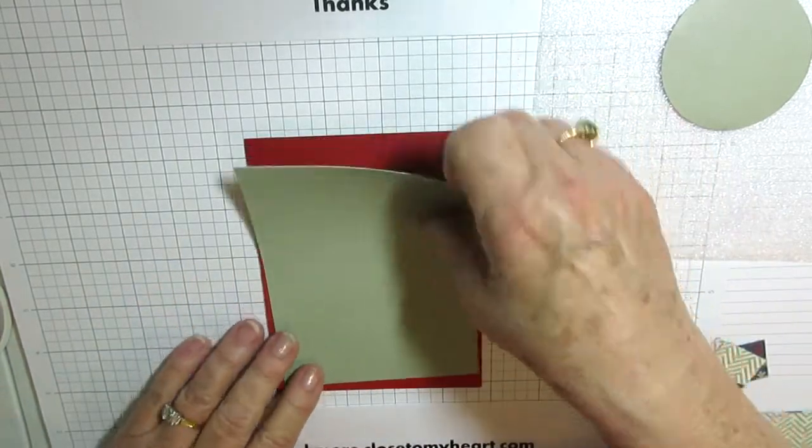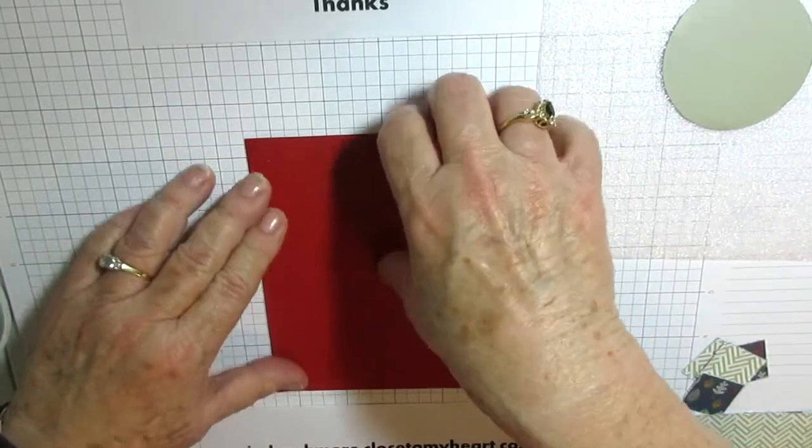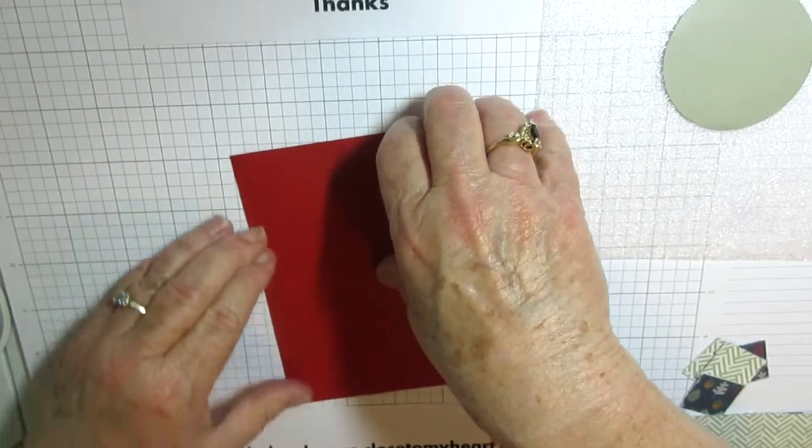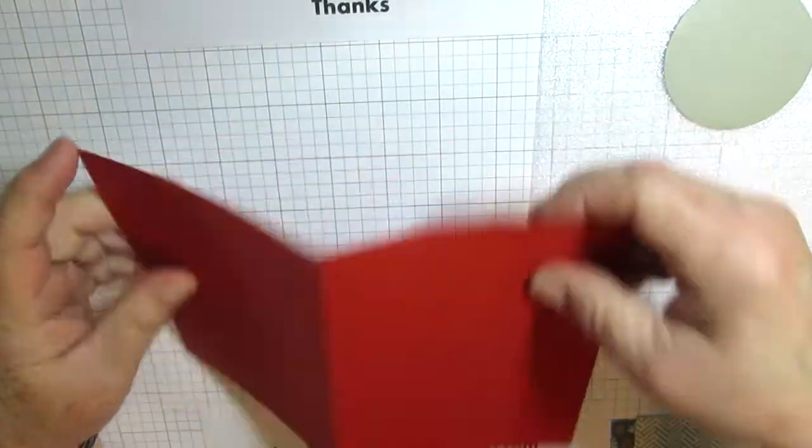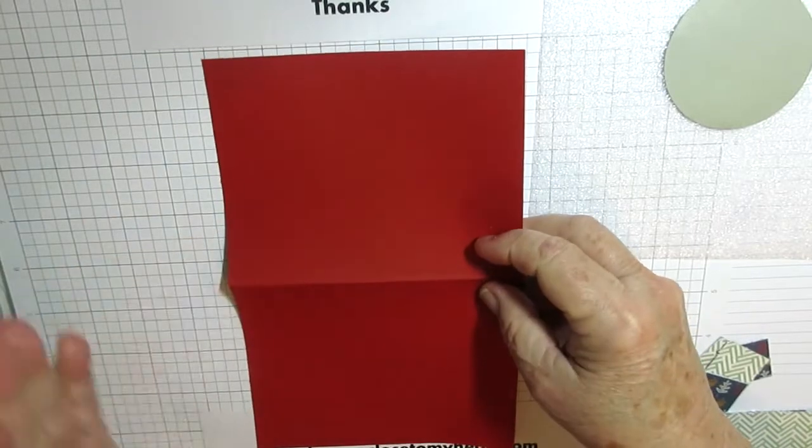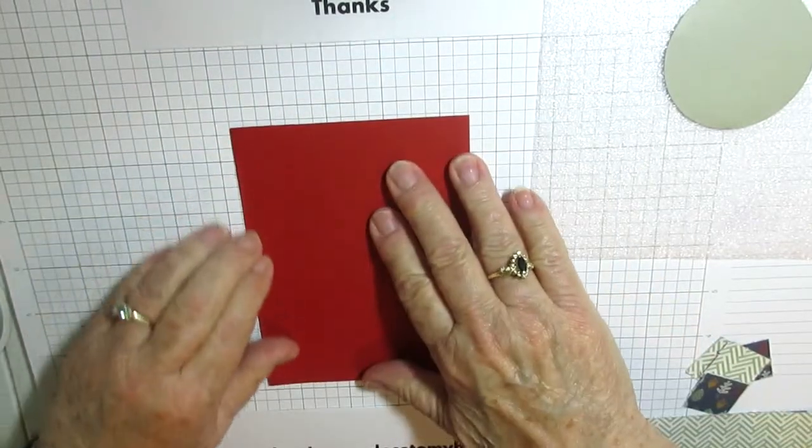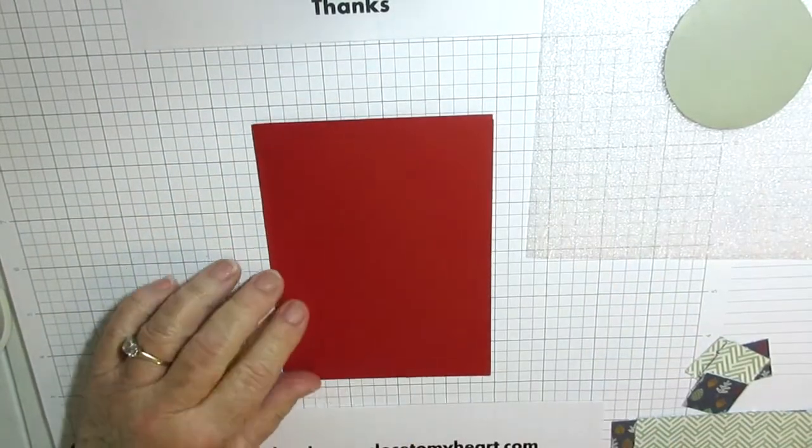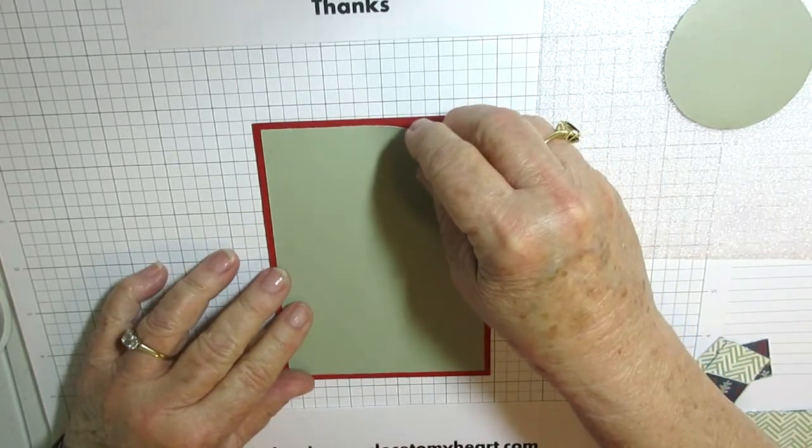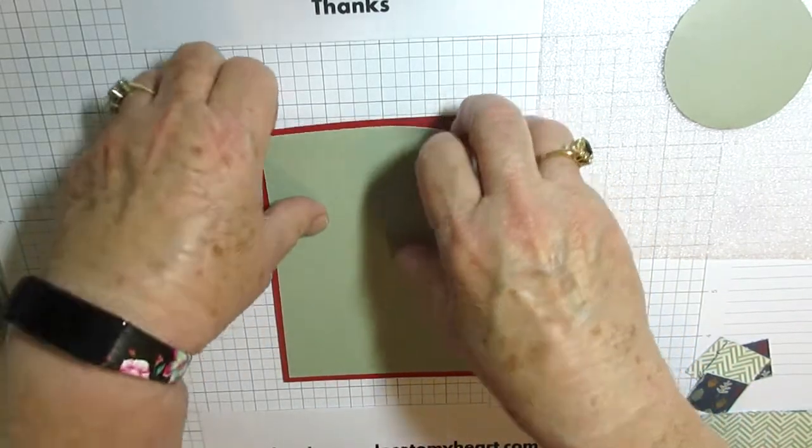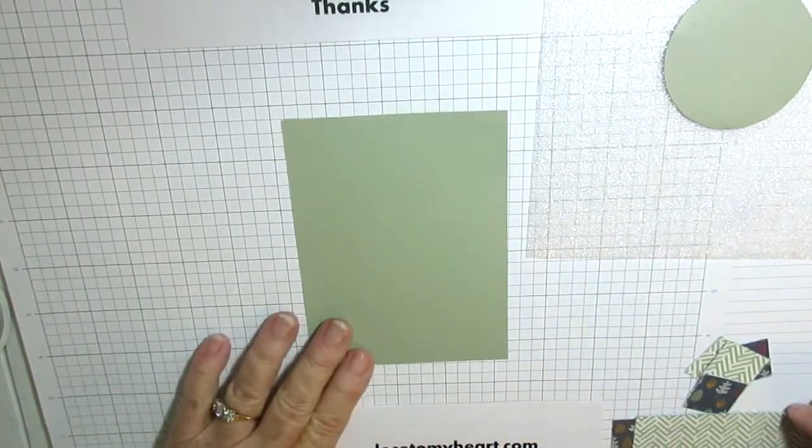I'm using an A2 size base for my card. This is an eight and a half by eleven cut in half, five and a half for the base. This is the first layer. I'm not going to put that on yet. I'm going to put the pieces on this layer.